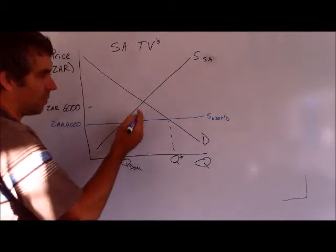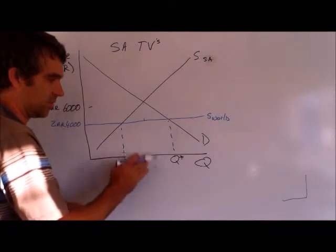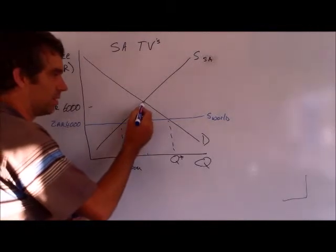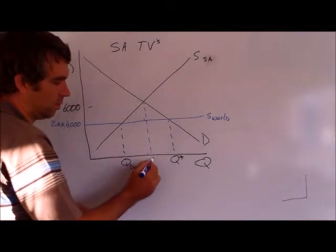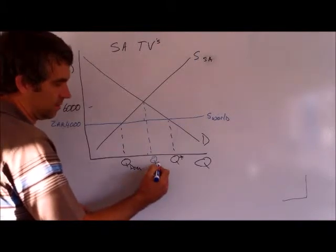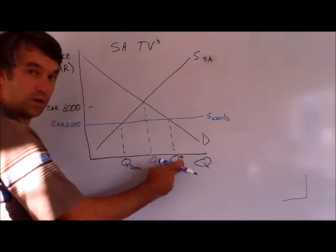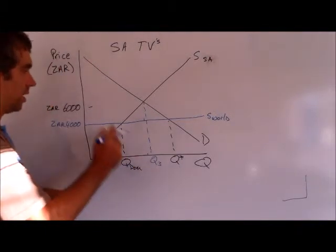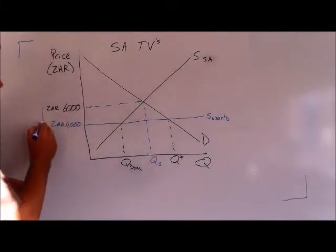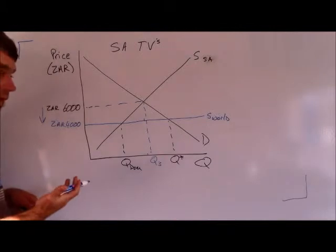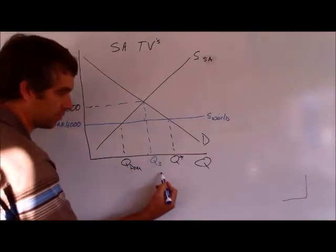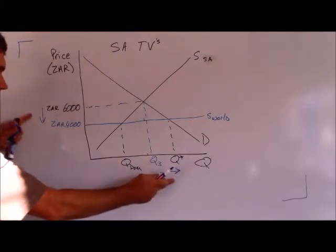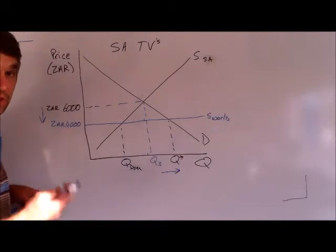Okay? Now look, if I bring back this curve, you saw me draw in this intersection right here. I took it away for a second. If I bring this back, we can see a couple of important outcomes. First of all, we can see that South Africans are getting more TVs than they were without international trade. We can also see that the price of TVs in South Africa has fallen. So both of those outcomes, if we assume that having more TVs is a good thing and lower prices are a good thing, both this outcome and that outcome are going to be positive outcomes for South Africa.